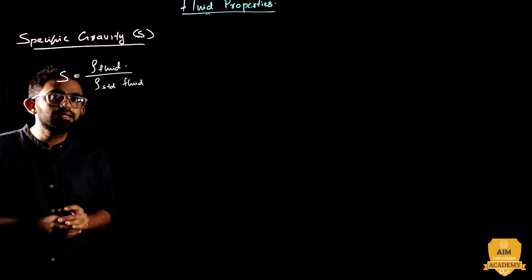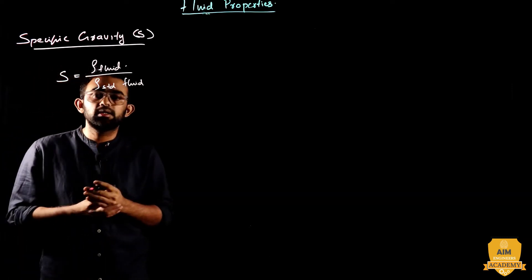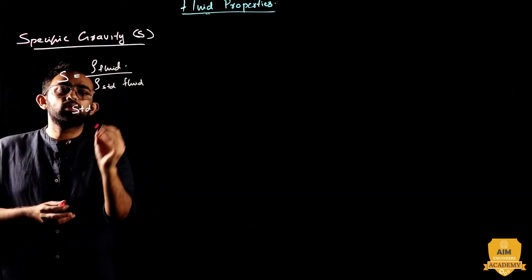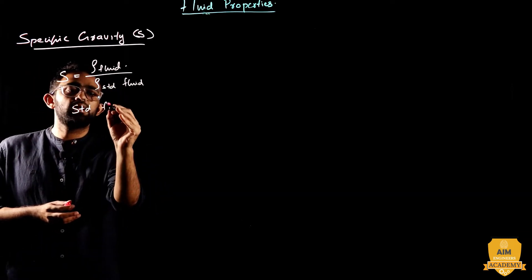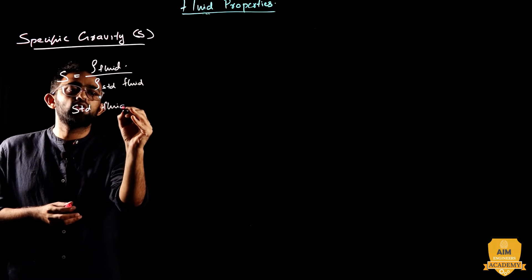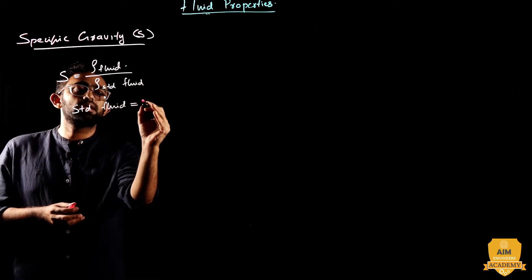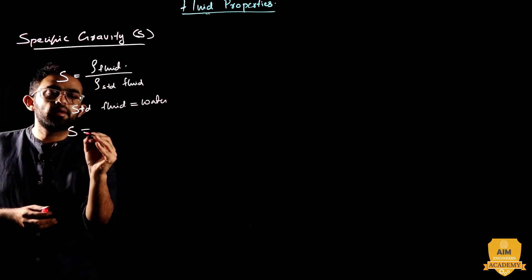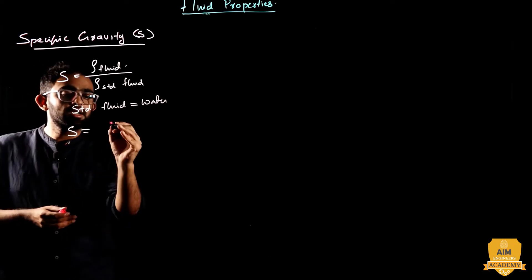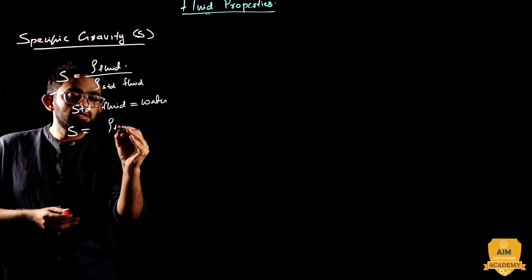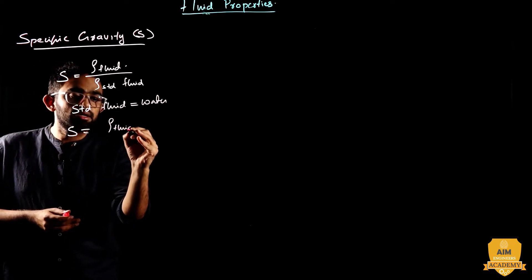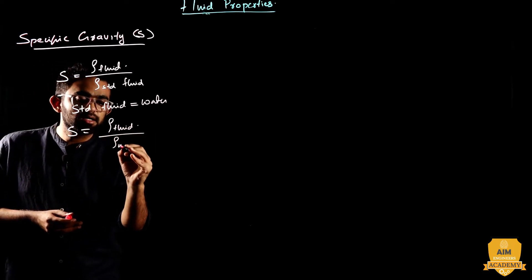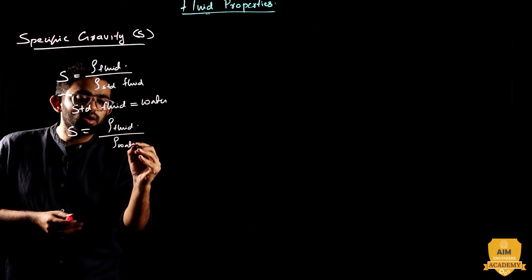In fluid mechanics, water is the standard fluid. So, specific gravity is the density of that particular fluid divided by the density of water.